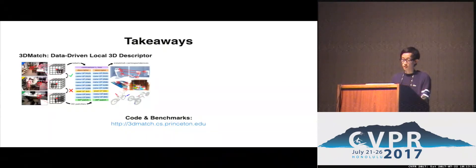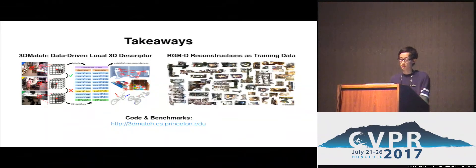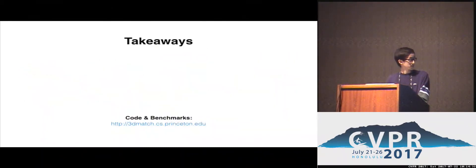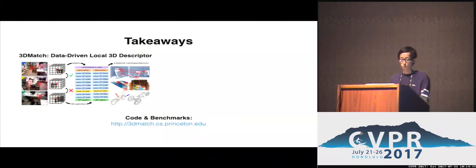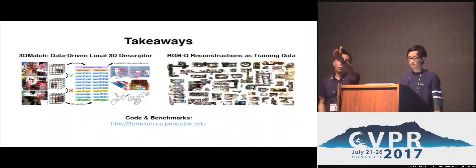To conclude, we have presented 3D Match, a data-driven local 3D descriptor for matching features in real-world scanning data. 3D Match is the first of its kind, made possible by using RGBD reconstructions as training data, which provide millions of freely obtained correspondence labels. We hope to encourage you to think about potential ways to use correspondences from reconstructions as training data for your own deep models. We also provide all the code and data at the link below. Please come to our poster session, and thank you for listening.